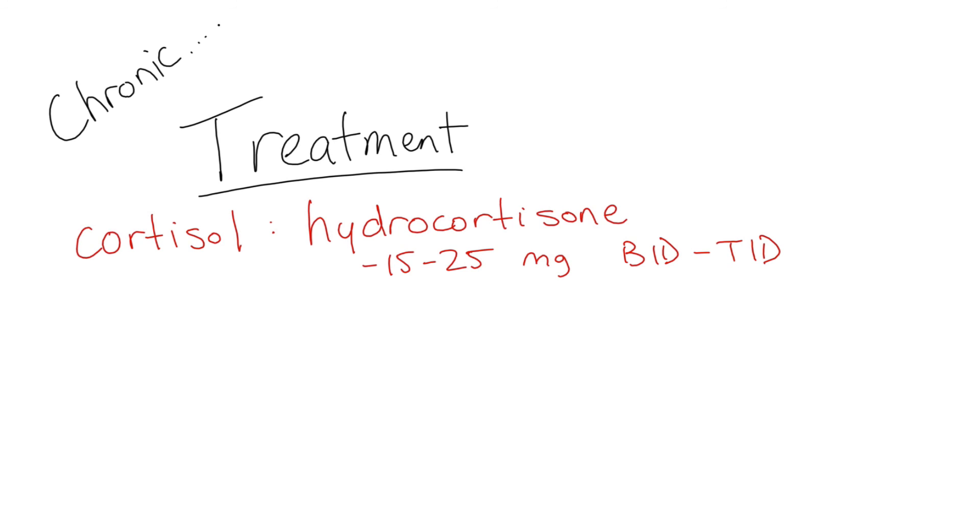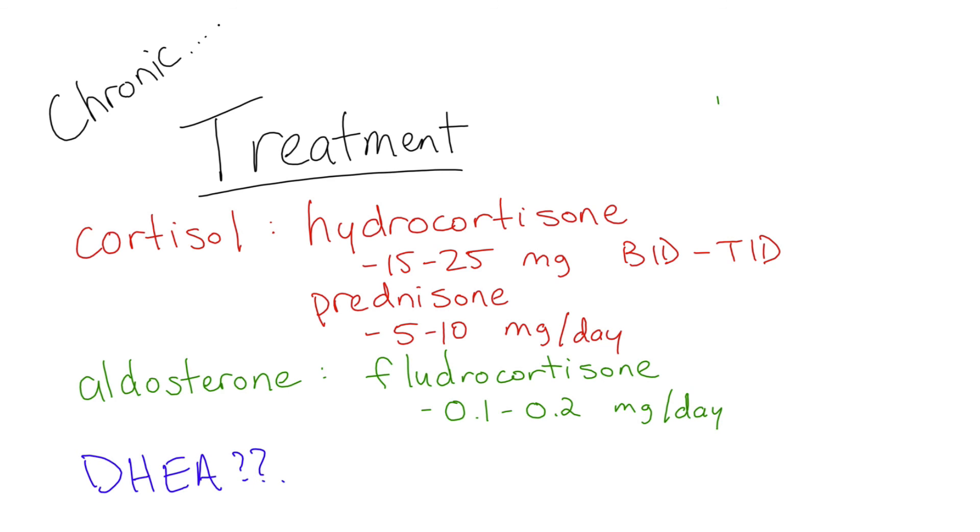Treatment of chronic adrenal insufficiency depends upon the level of the defect. Glucocorticoid replacement can be done with either hydrocortisone, often preferred because of its short activity and is more physiologic, or prednisone, sometimes preferred because of its simplistic once-daily dosage. Mineralocorticoid replacement is only given with primary adrenal insufficiency. DHEA replacement is not established and likely unnecessary.